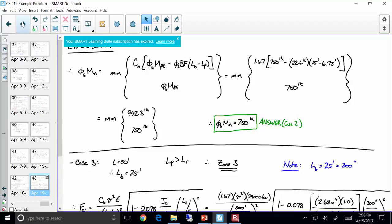However, when we get into design, this is one of the big reasons why multiple iterations need to be done in many times for design. So, for case two, our phi M_N ultimately does end up being 750 foot kips as well.